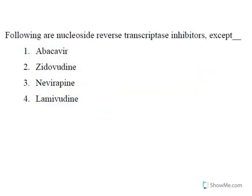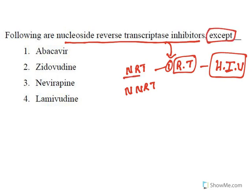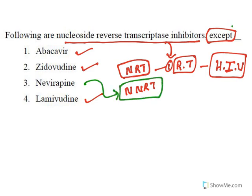Next question: 'Following are nucleoside reverse transcriptase inhibitors (NRTIs) — except.' Reverse transcriptase is an enzyme required for HIV survival and can be inhibited by NRTIs or NNRTIs. Abacavir, zidovudine, and lamivudine are all NRTIs. Nevirapine belongs to the non-nucleoside reverse transcriptase inhibitor (NNRTI) category — so Nevirapine is the correct 'except' answer.